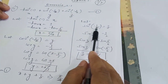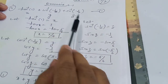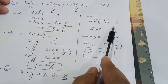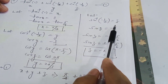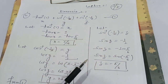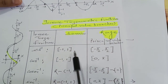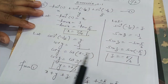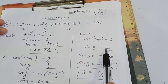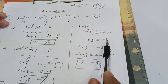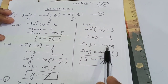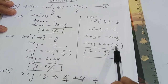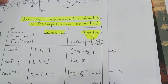Similarly, let sin⁻¹(-1/2) = z, so sin z = -1/2. The principal solution branch for sin⁻¹ is [-π/2, π/2]. Since sin(π/6) = 1/2 and sin(-θ) = -sin(θ), we have sin z = sin(-π/6), therefore z = -π/6.